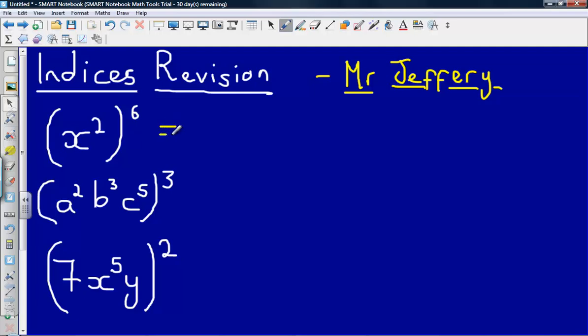When this happens we simply multiply the powers together, so it will become x squared to the power of 6, 2 times by 6 will give us 12, so it becomes x to the power of 12.